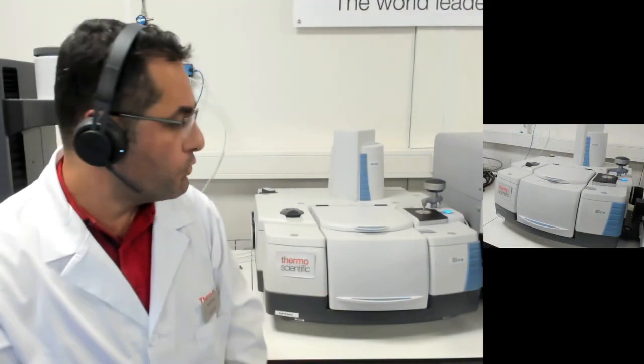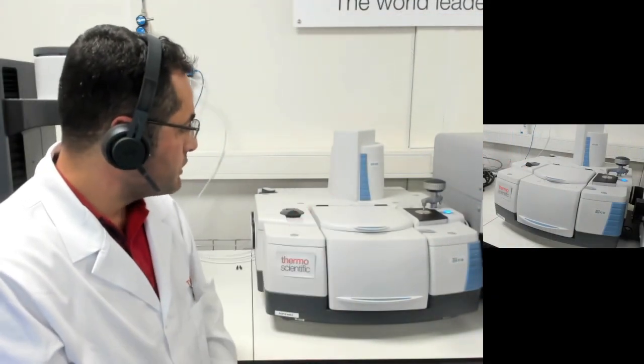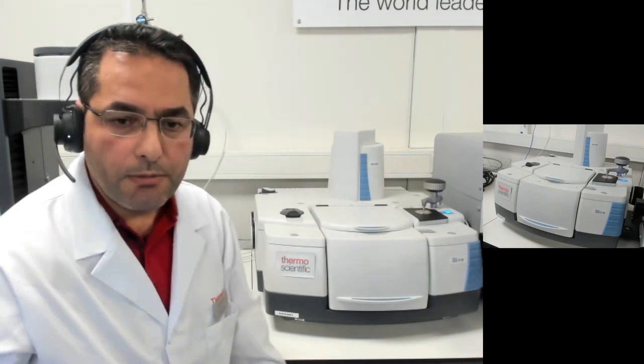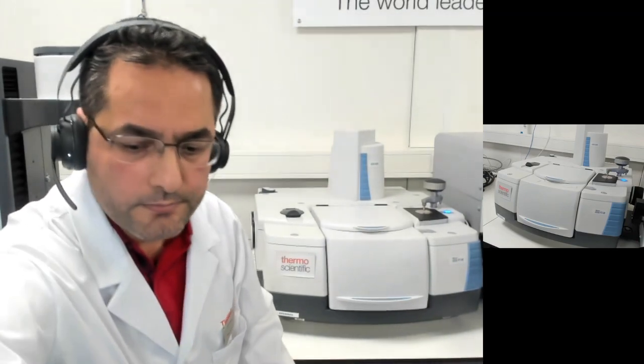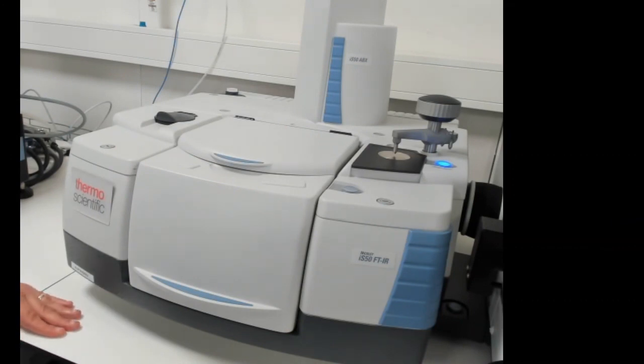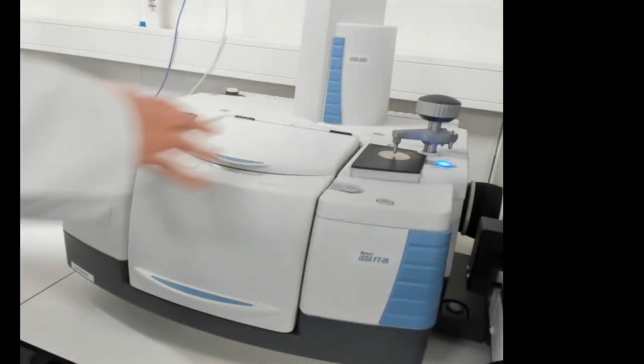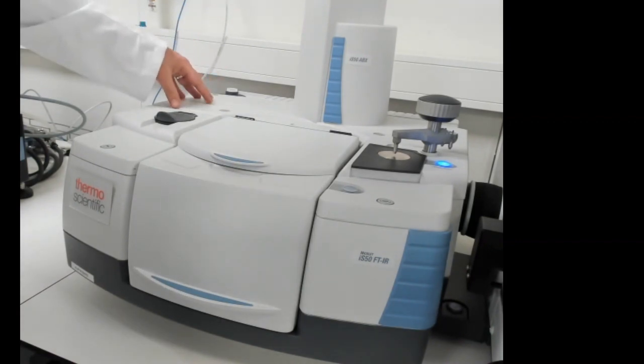So now let me walk you through the system in order to give you more insight about what the system can do for you. Here we have a zoom in view of the system. This is the main bench of the IS-50 and this part has the different light sources. You can choose between infrared source for mid and far infrared measurements. You can also choose white light source for near infrared measurements.